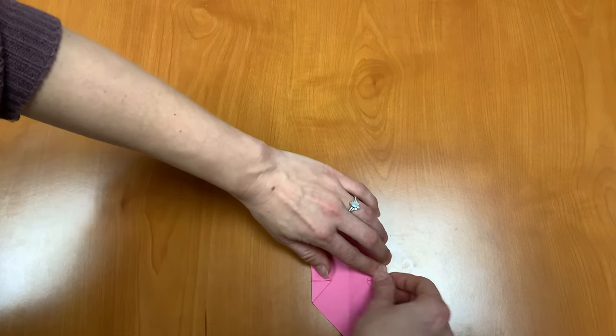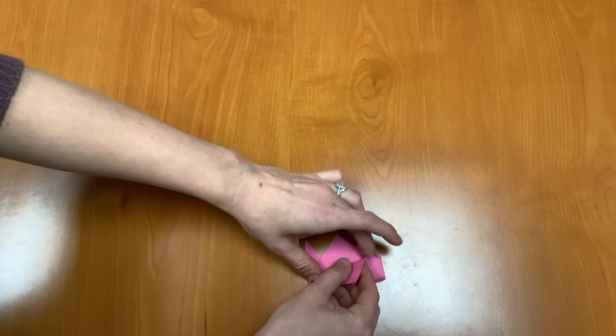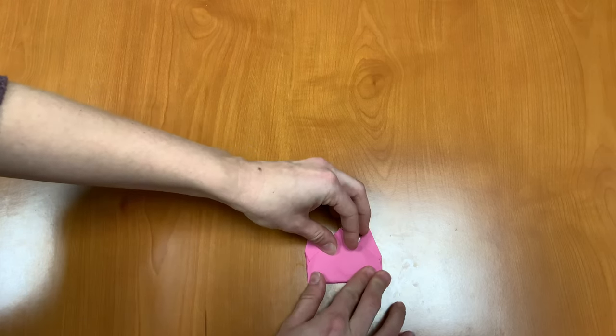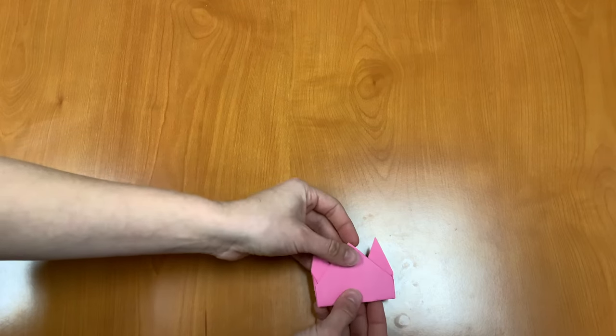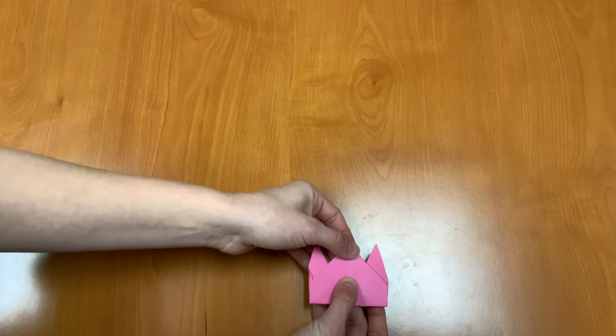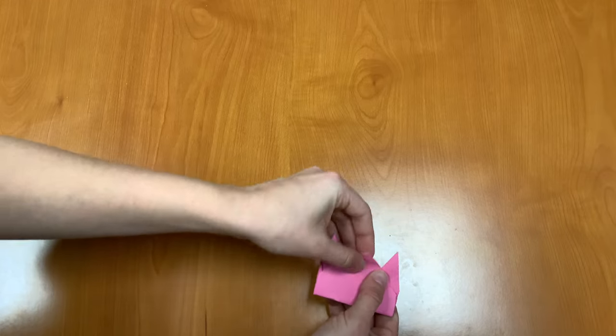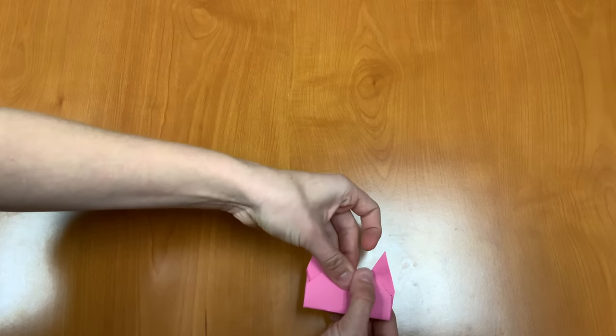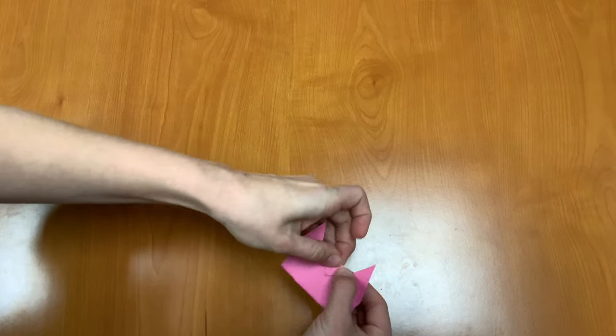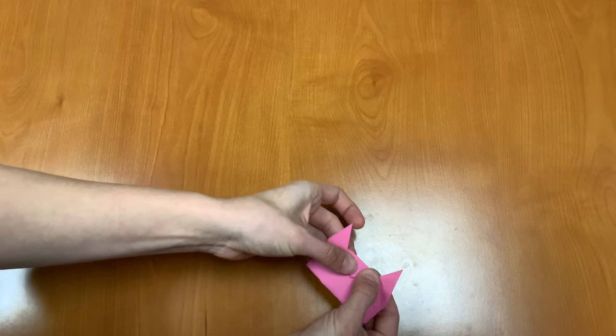Keep the folds nice and crisp so press down nice and hard on them. And then we're going to take this bottom flap and fold it up. Now we're going to fold the top middle piece, this little triangle up here, down. And fold it nice and flat, all those layers in there.